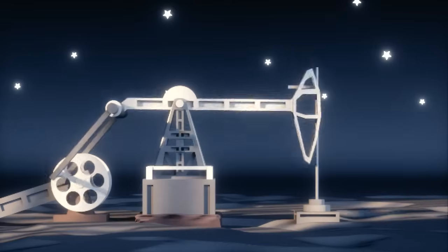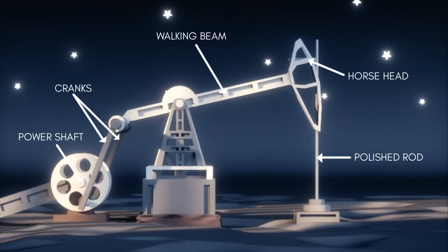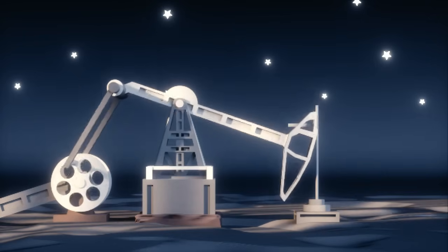In the process of crude oil extraction, the pump which mainly contains power shaft, cranks, walking beam, horse head, and polished rod extracts oil from the earth.